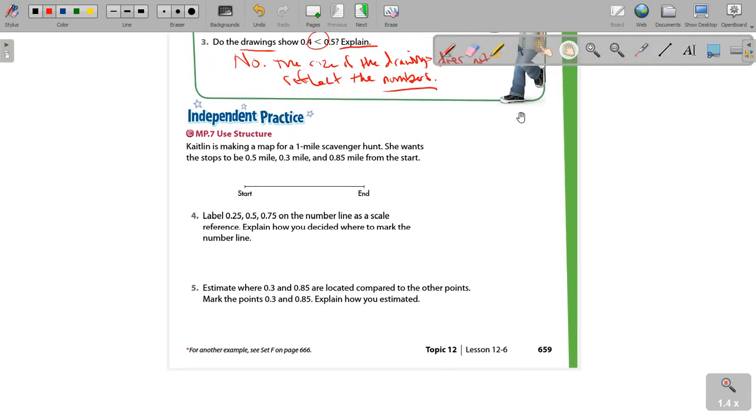Okay, so let's go down to the independent practice section and see what we have going on here. Caitlin is making a map for a one-mile scavenger hunt. She wants the stops to be 0.5 miles, 0.3 miles, and 0.85 miles from the start. Well, we know the start and the end. So that tells us that this is going to be zero, this is going to be one. 0.5, that's the easiest one. That's right in the middle, 0.5, the halfway mark.